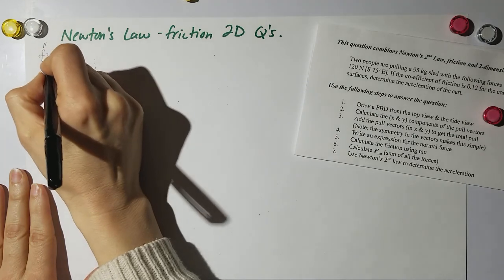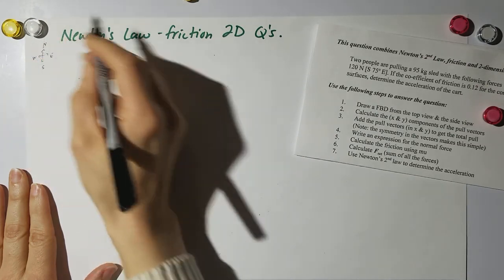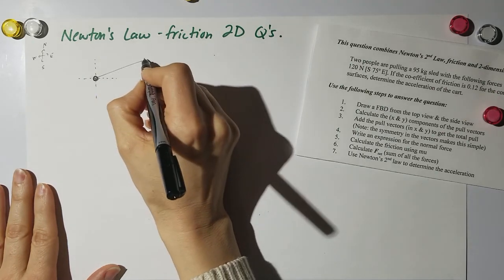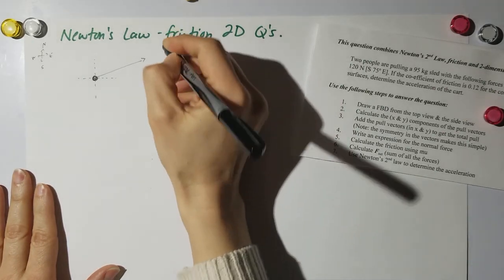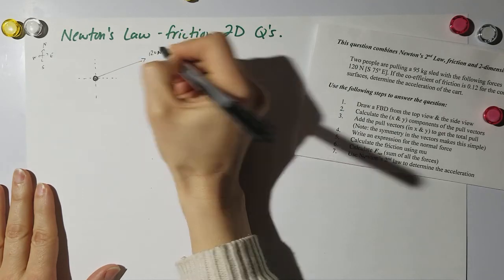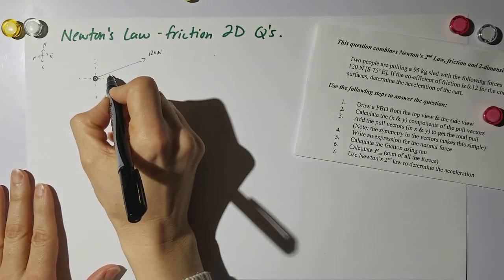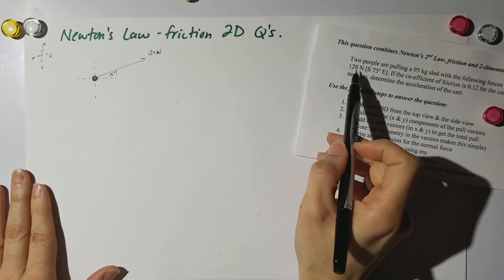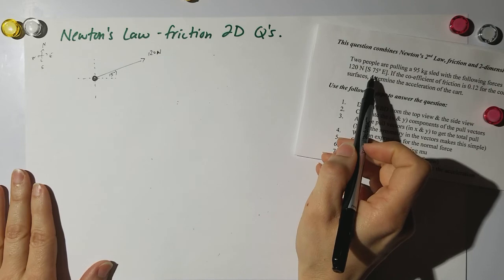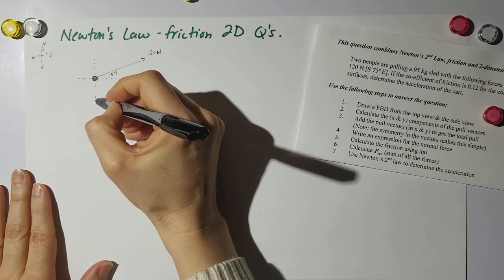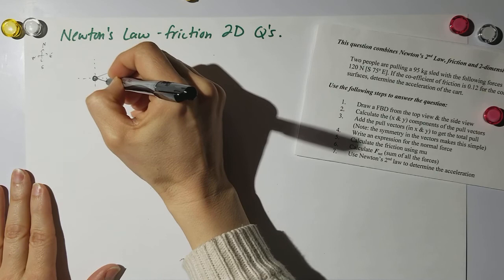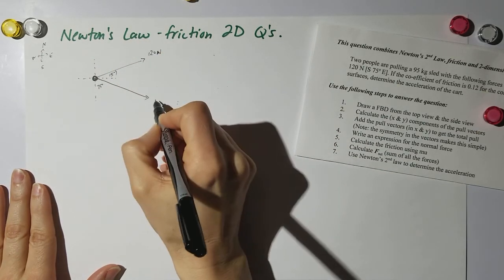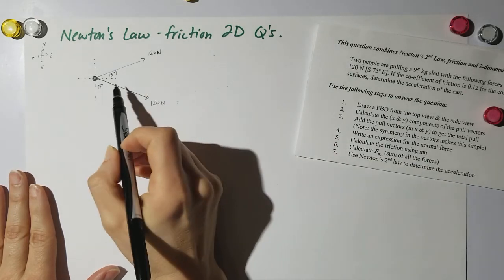There's my one vector, that's 120 newtons. This right here is 15 degrees. The other force is 120 newtons south 75 degrees east, so I point south and then rotate 75 degrees. This is 75 degrees, this is 120 newtons.